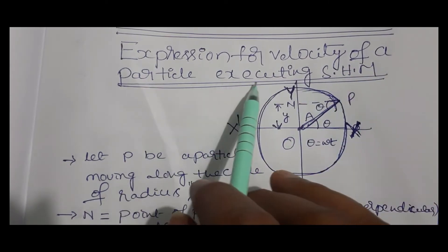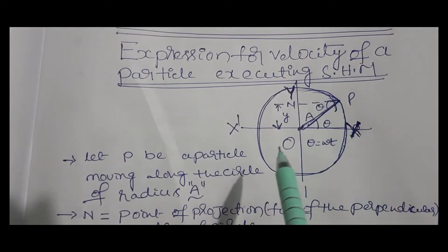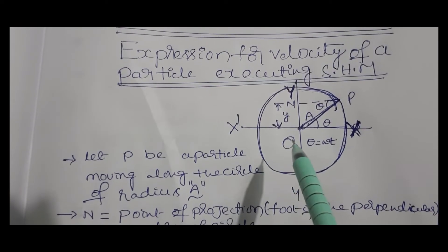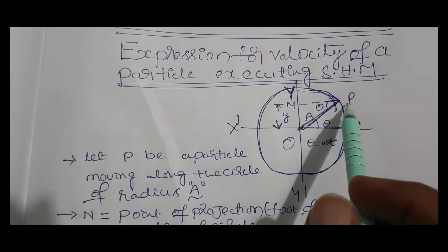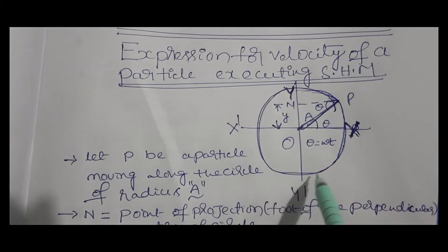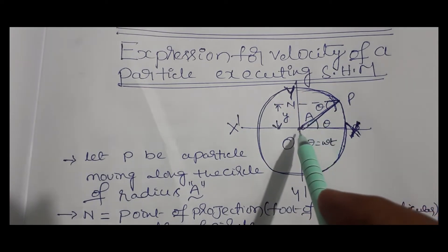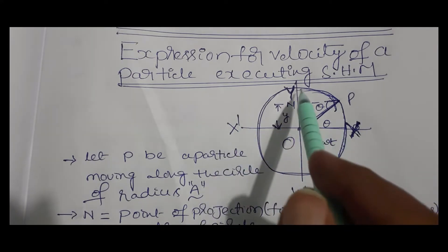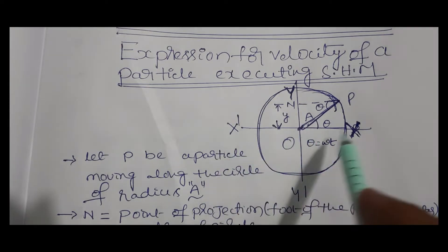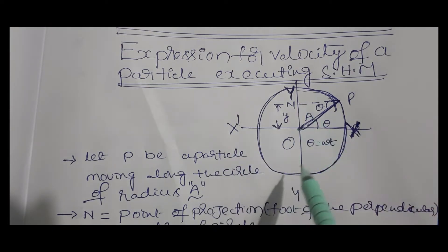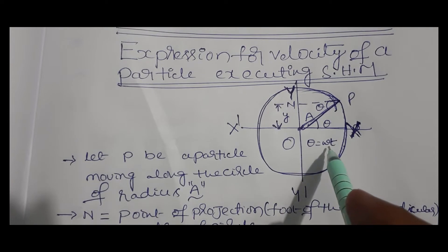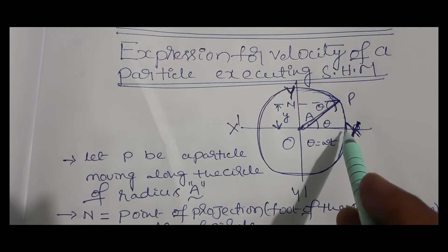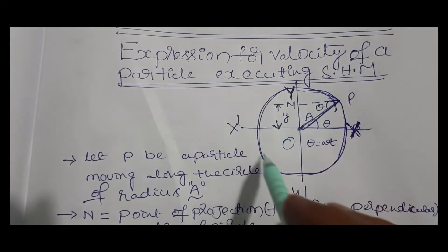We are deriving the expression for the velocity of a particle executing simple harmonic motion — an important topic in class 11 physics, intermediate first-year physics, and polytechnic diploma physics. Consider P is a particle moving along a circle of radius A. O is the center of the circle, and x-x' and y-y' are the perpendicular diameters. Theta is the angular displacement given by theta equals omega times t, where omega is the angular velocity.